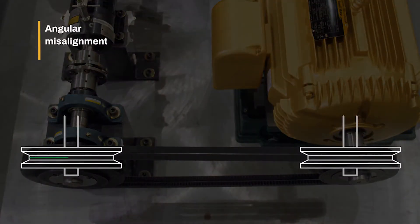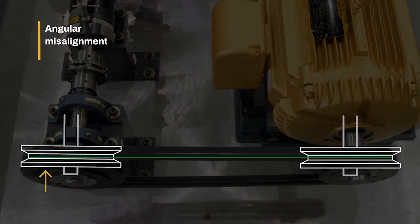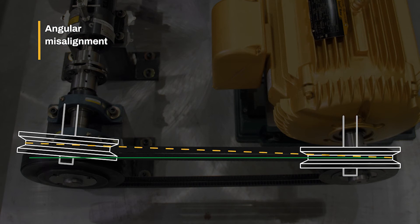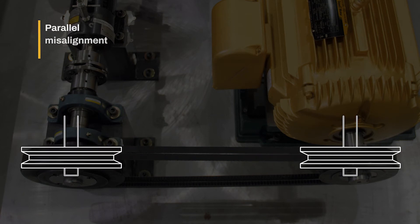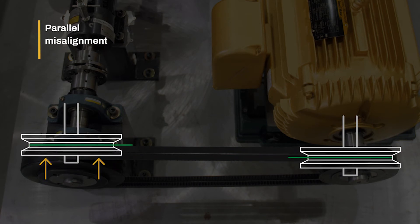Angular misalignment occurs when a shiv is rotated, creating an angle between the center lines of each shiv. Parallel misalignment occurs when the shivs are offset from each other, creating a physical gap between the center lines of each shiv.